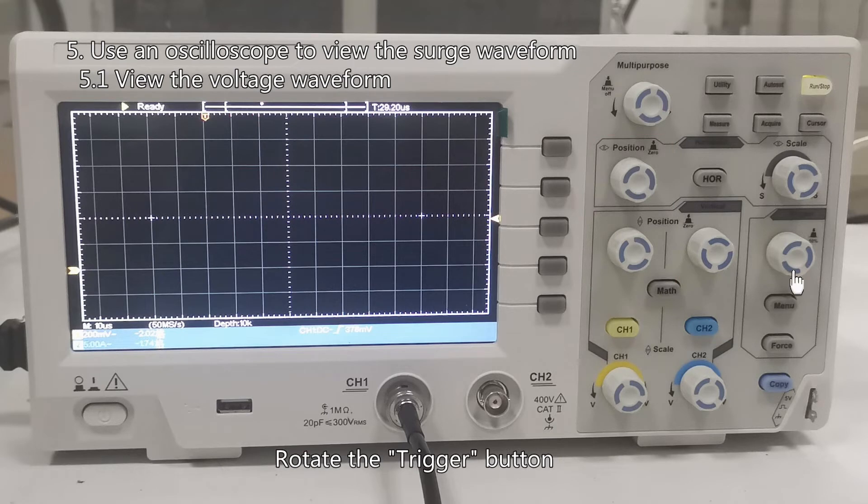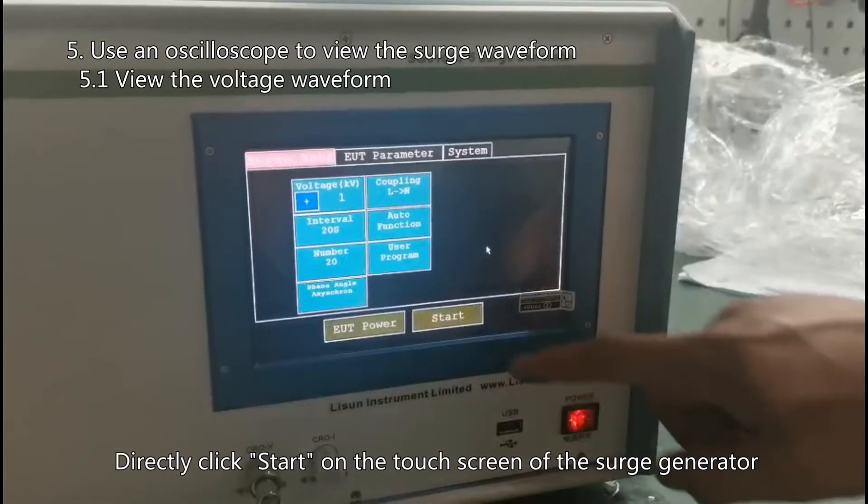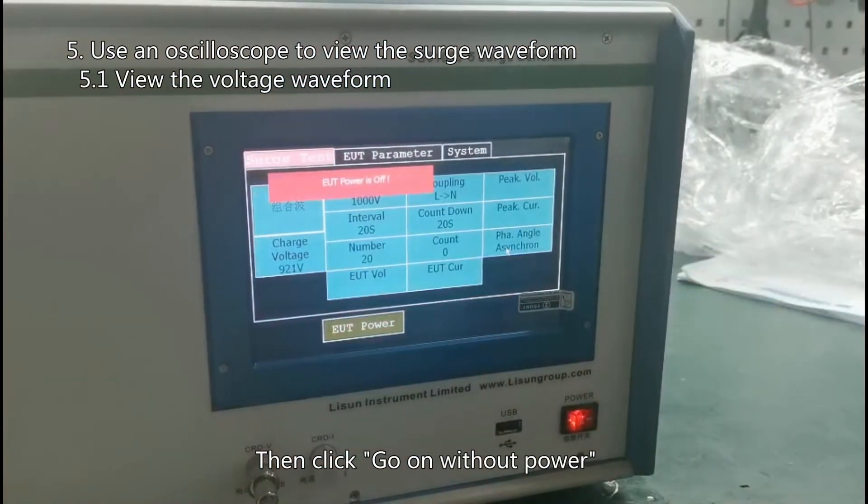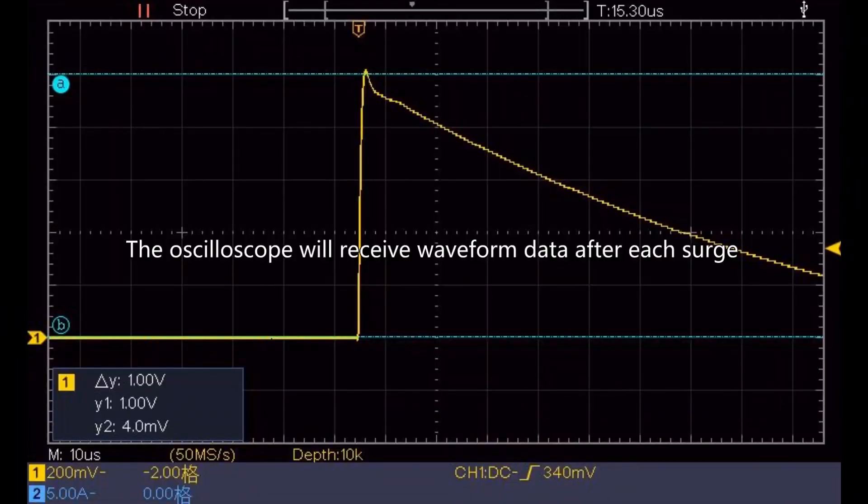Rotate the trigger button. Adjust the trigger level to the approximately middle position. Directly click start on the touch screen of the surge generator. Then click go on without power. The oscilloscope will receive waveform data after each surge.